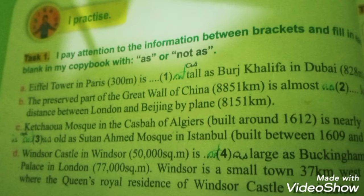B: The preserved part of the Great Wall of China is almost as long as the distance between London and Beijing by plane. We look at the numbers. And we have: C: Ketchaoua Mosque in the Casbah of Algiers, built around 1612, is nearly as old as Sultan Ahmed Mosque in Istanbul, built between 1609 and 1660.